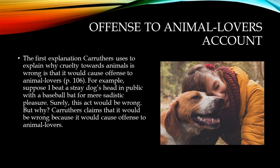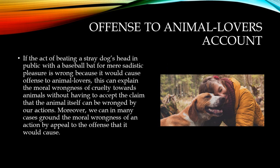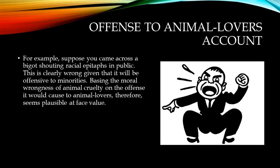Carruthers puts forward two different accounts of indirect moral obligations toward animals. The first explanation he offers for why cruelty towards animals is wrong is that it would cause offense to animal lovers. For example, suppose I beat a stray dog's head in public with a baseball bat for mere sadistic pleasure. Surely, this act would be wrong. Carruthers claims that it would be wrong because it would cause offense to animal lovers. We can, in many cases, ground the moral wrongness of an action by appeal to the offense it would cause — for instance, a bigot shouting racial epithets in public is clearly wrong given that it will be offensive to minorities. Basing the moral wrongness of animal cruelty on the offense it would cause to animal lovers, therefore, seems plausible at face value.